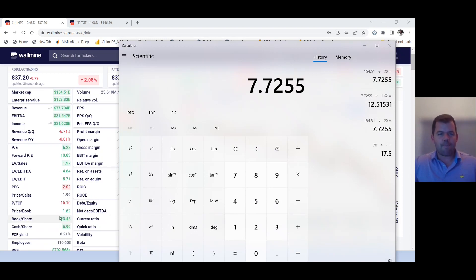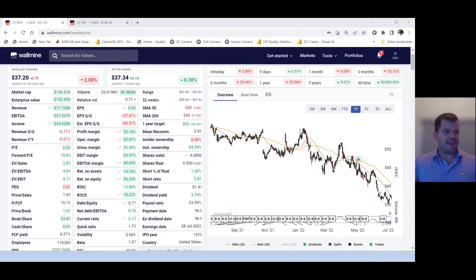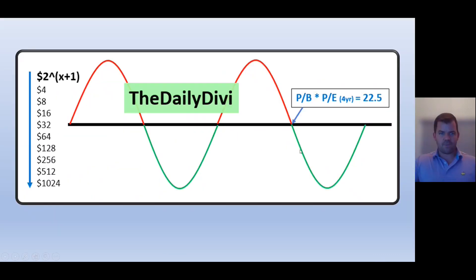So we're going to times that. Remember that price to book, $1.62. So we're going to times that number by $1.62. We've got $12.51. This is significantly less than $22.5.